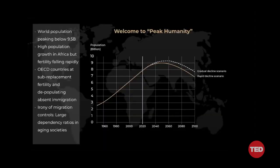All of this is happening at a time when, instead of the world reaching 15 billion people as some predicted in the 1980s and 1990s, our world population may never even reach 10 billion. I call it 'peak humanity.' Fertility is declining.